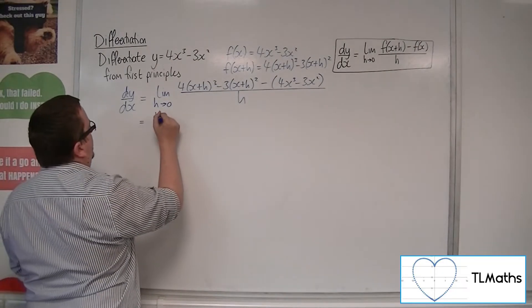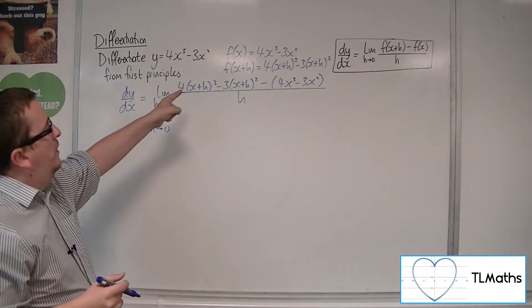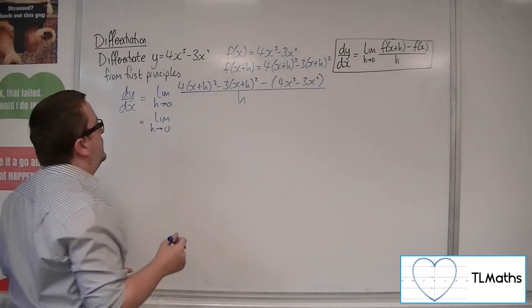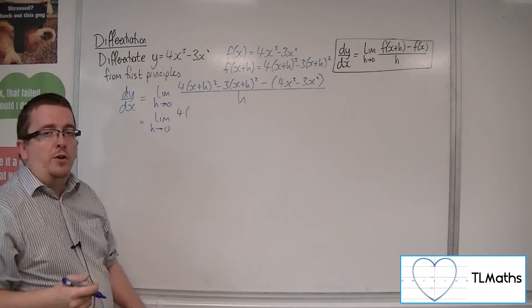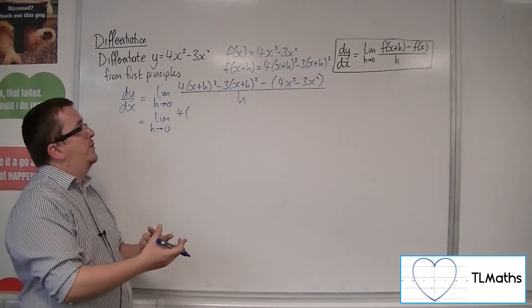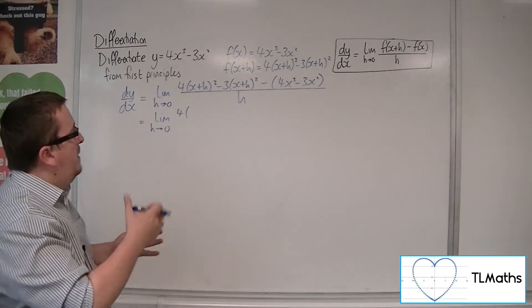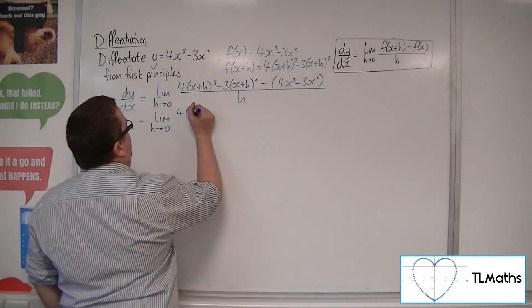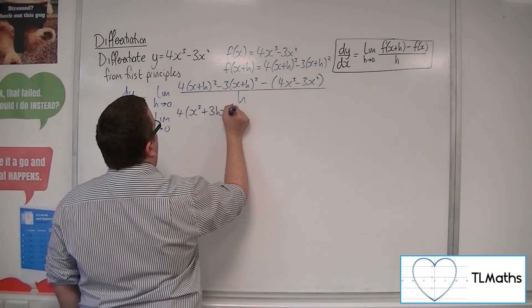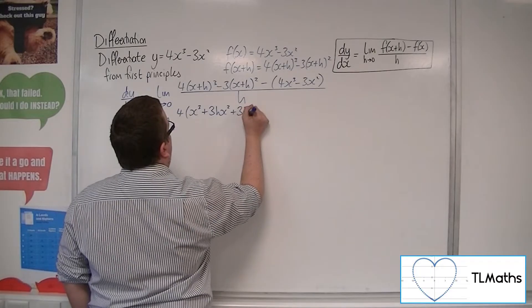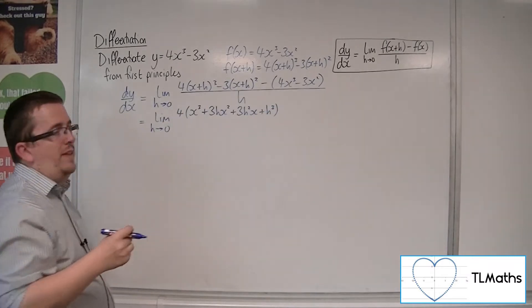So we now need to expand these brackets. Now we've got 4 lots of x plus h cubed. So that's 4 lots of—now as I said in the previous video, if you're not happy about going straight from that to an expanded form, then go through it step by step. So 4 lots of x cubed plus 3hx squared plus 3h squared x plus h cubed. That's the expansion of that.